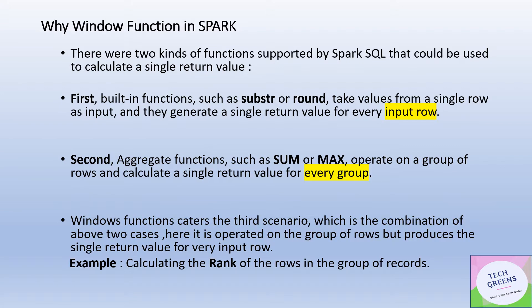So why window functions? Let's try to see it from a design perspective. Two kinds of functions were already available in Spark. First are built-in functions like substring and round, which take a single row as input and produce a single return value for that particular row — one input, one output. For example, you pass in a record value for a column and you get the return value.